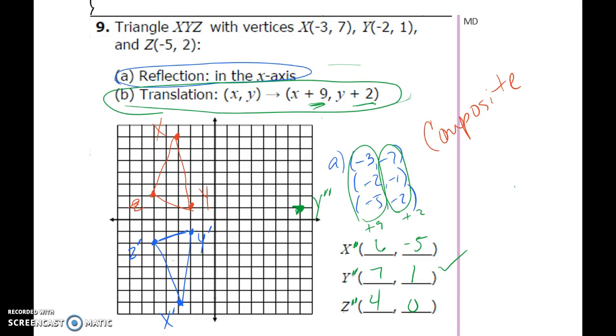Now we'll do the other points. So I need a point at 6, negative 5. And that's going to be where X just moved. So I'll call it X double prime. And then Z is at 4, 0. Z double prime.